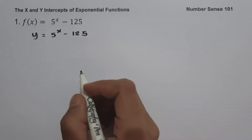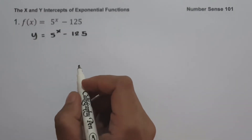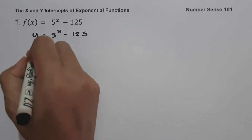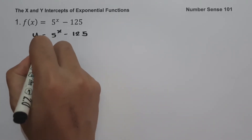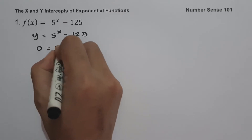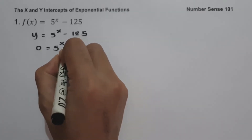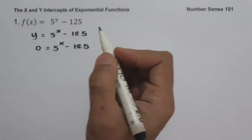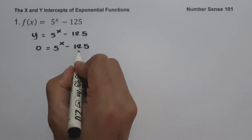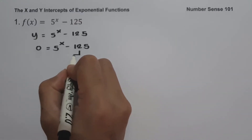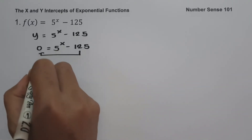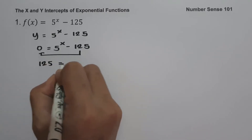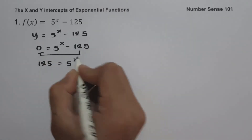First, let us find the x-intercept. To find the x-intercept, let us set y equal to zero, giving us 0 equals 5 raised to x minus 125. To solve for x, let us move negative 125 to the side of zero, giving us 125 equals 5 raised to x.